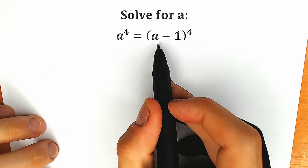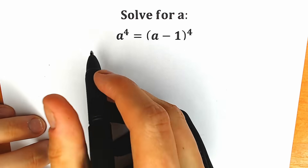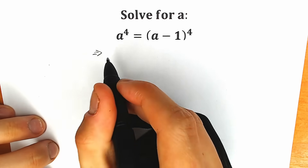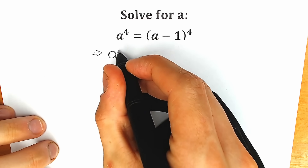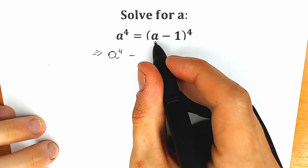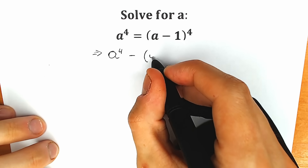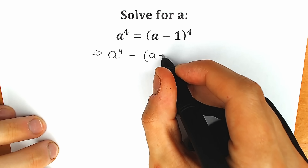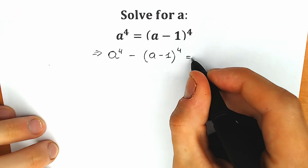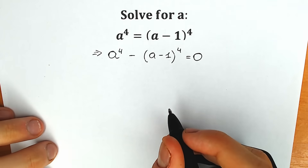First of all, let's move the right side to the left side with the negative sign. As a result we have: a to the fourth minus (a minus one) to the fourth power, equal to zero. This is our first step.